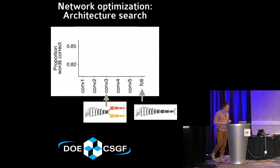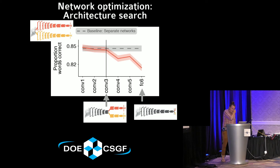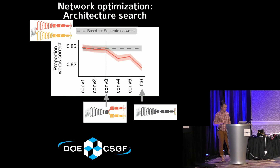Based on the notion that sharing as much as possible might be optimal given resource constraints like the number of neurons in your brain, we selected the network by asking how many layers can be shared without taking a detriment in task performance. The y-axis shows the proportion of words correctly identified. We found we can share about half the network before we really take a hit in performance, so we used this half-shared network as our model.